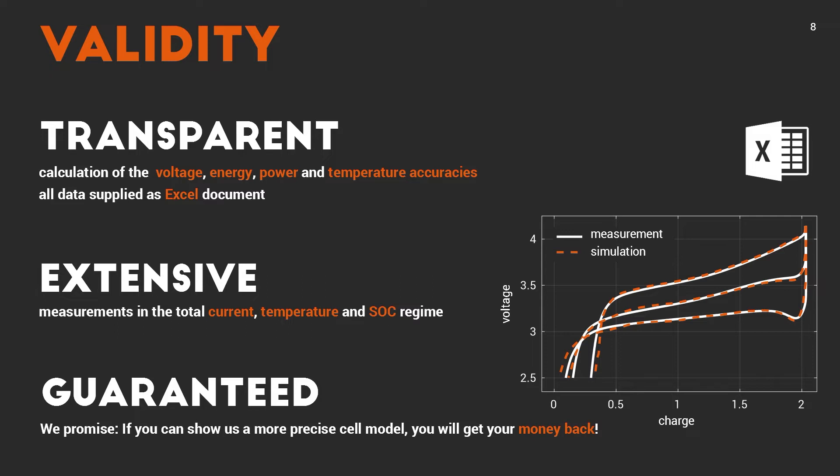The second thing is if we validate, we validate extensively. It's very easy to generate a battery model for 25 degrees C and low currents. Any bachelor student can do that. It's tough to get a model that can describe the total operational area of the cell as it is used in an automotive context. When we validate, we validate everything from minus 20 degrees C all the way up to 80 degrees C at the cell temperature, high pulse currents, low SOCs, and also high SOCs. And that's why we right now are quite confident. We even guarantee that. We guarantee that if you can show us a more precise cell model, we will give you your money back.